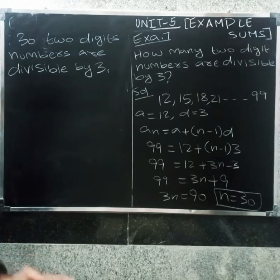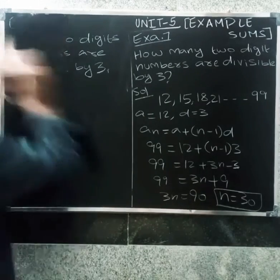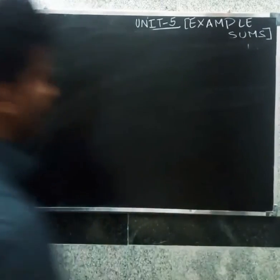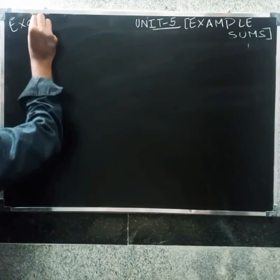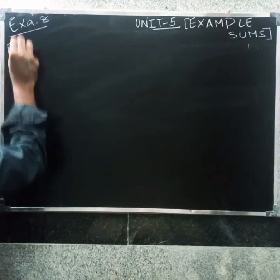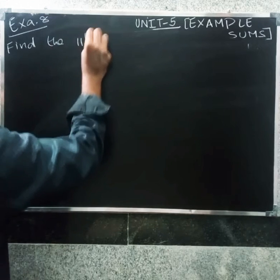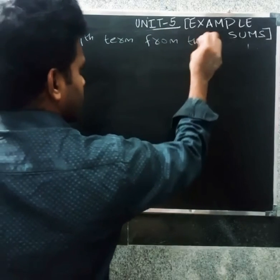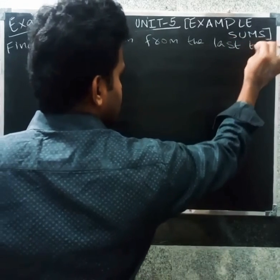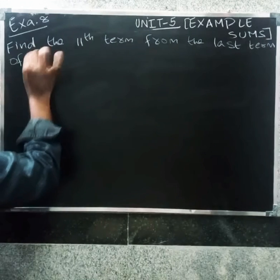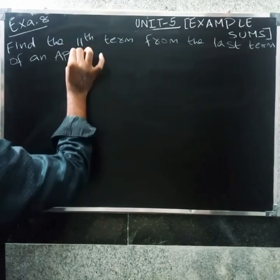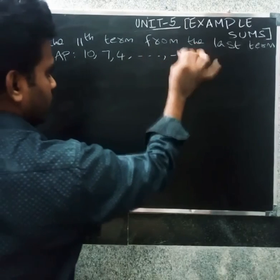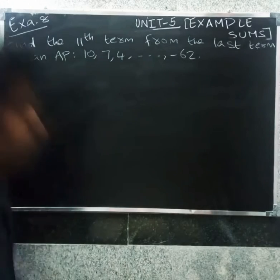Next is Example 8. We need to find the 11th term from the last term of the AP: 10, 7, 4, ... up to −62.